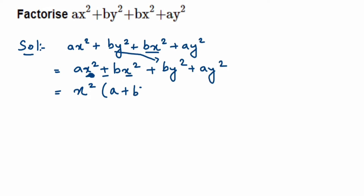In the last two terms, y² is common. From by² we get b, and from ay² we get a. So the second group gives y²(b + a), which is y²(a + b). Now look — we've got (a + b) in both groups.